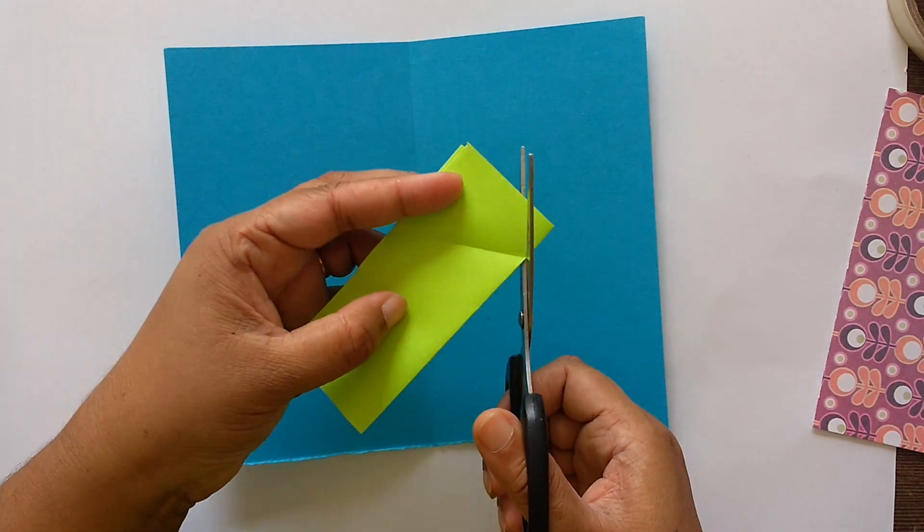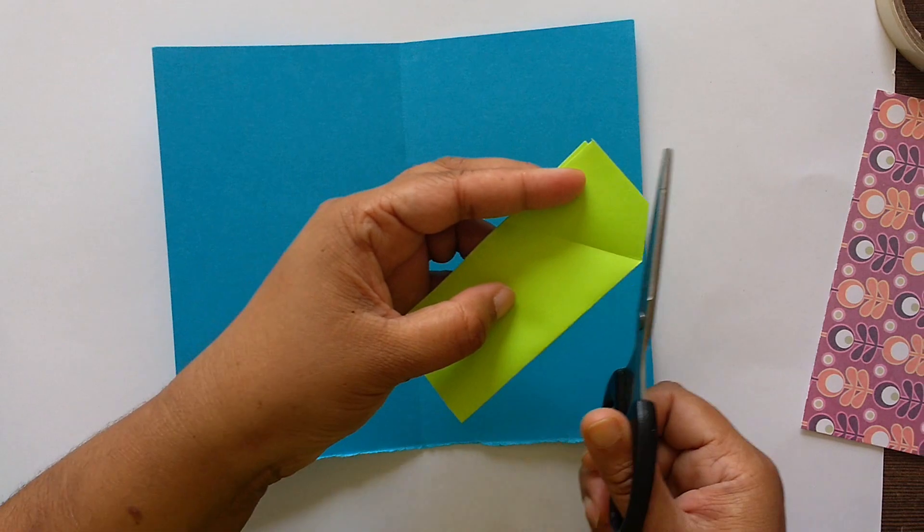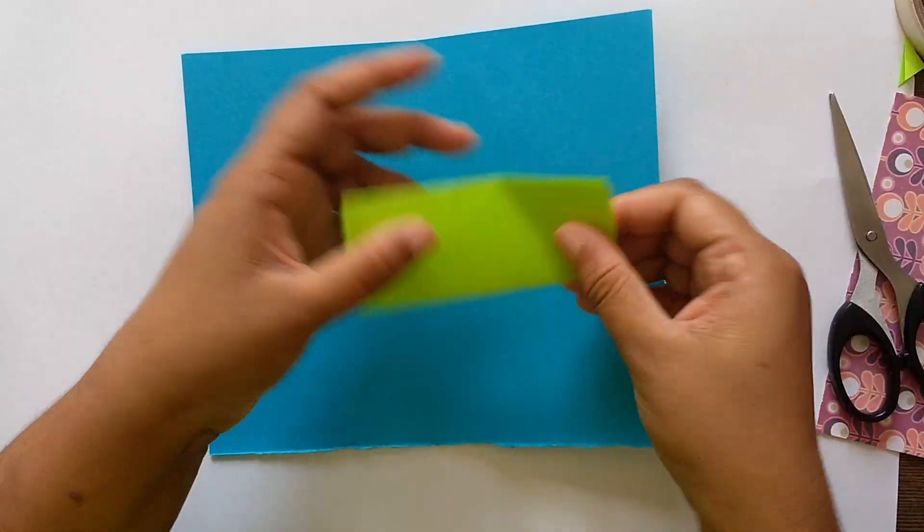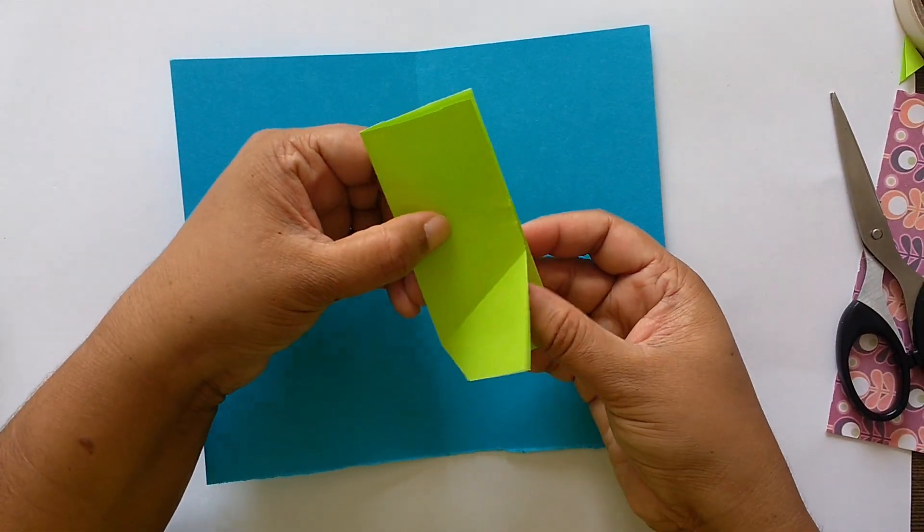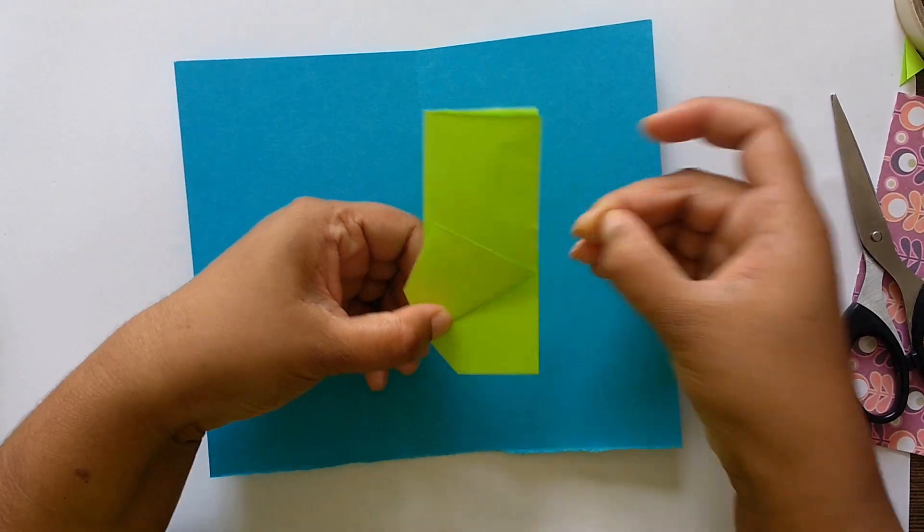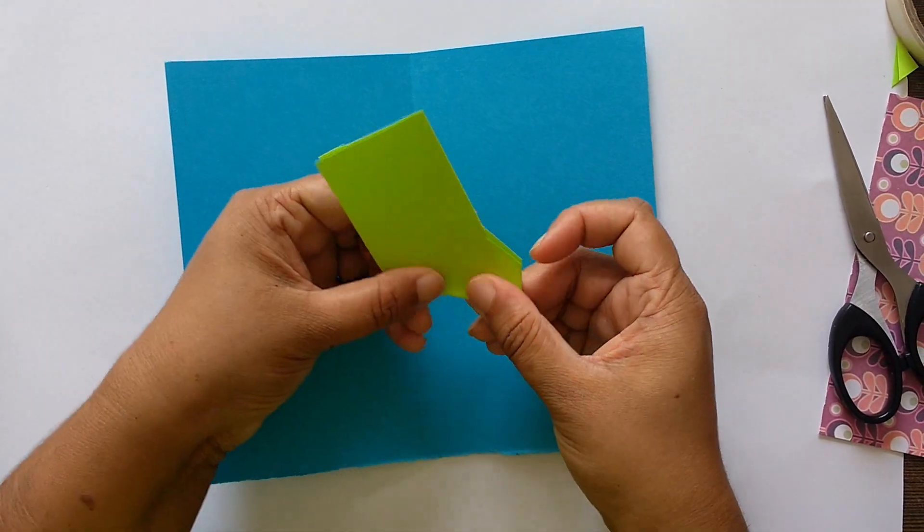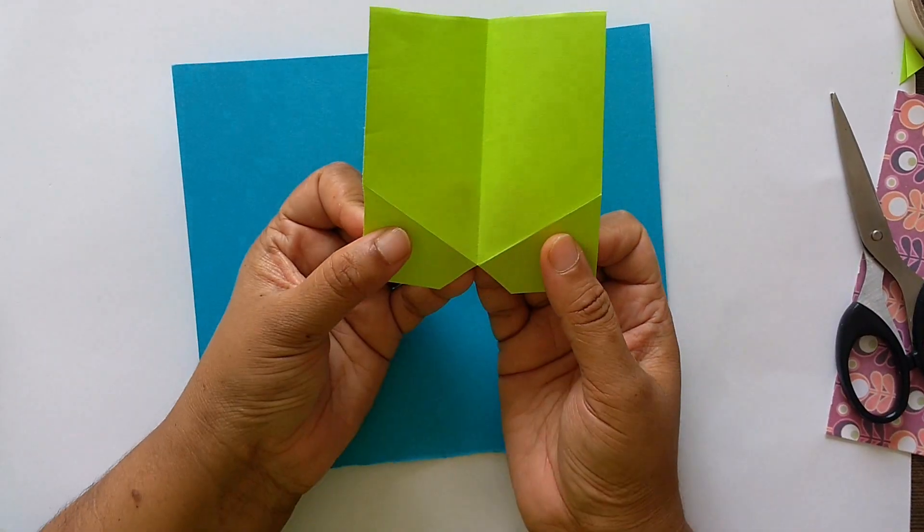Cut from this side. It will make the glue tabs. We have a piece like this.